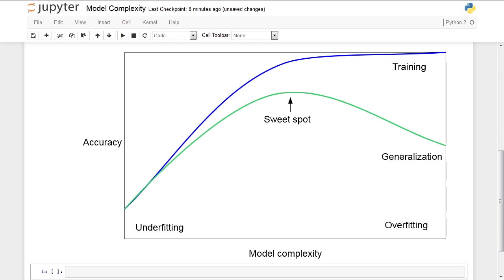This is a more general theme in machine learning, that is illustrated in this figure. Here the x-axis is model complexity, and y-axis is accuracy, or how well our model performs.